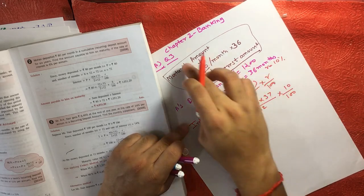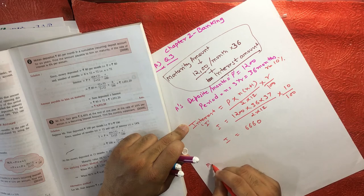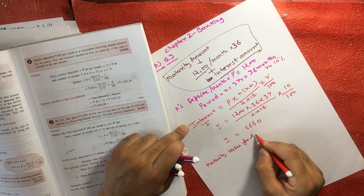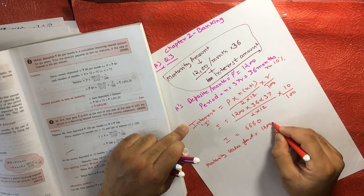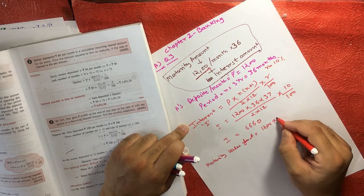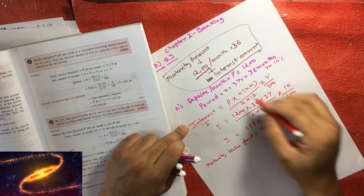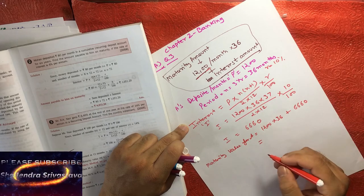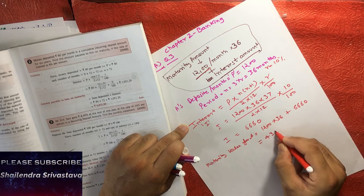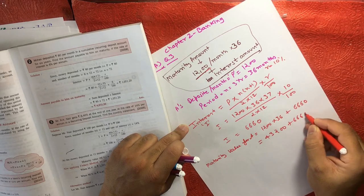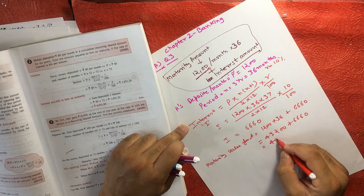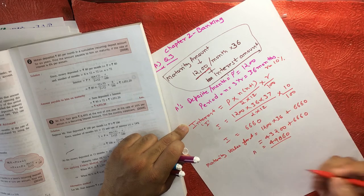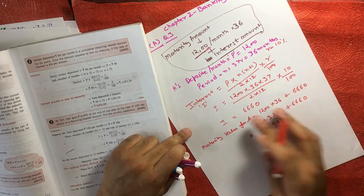Now we calculate the maturity value for A. Maturity value = 1200 × 36 + interest amount = 43200 + 6660 = 49860 rupees. So A will be getting 49860 rupees on maturity.